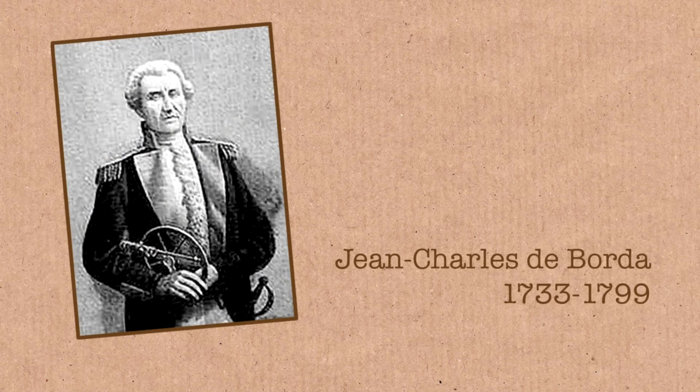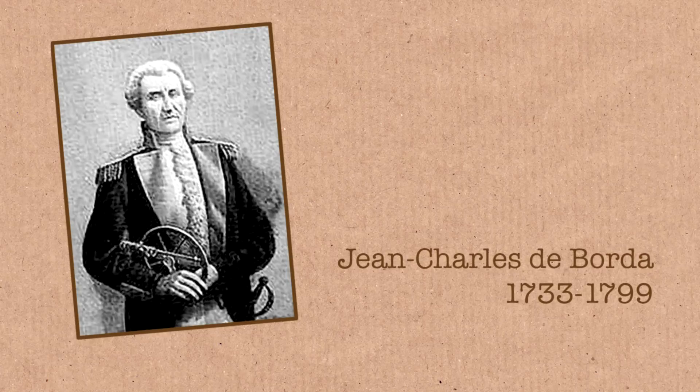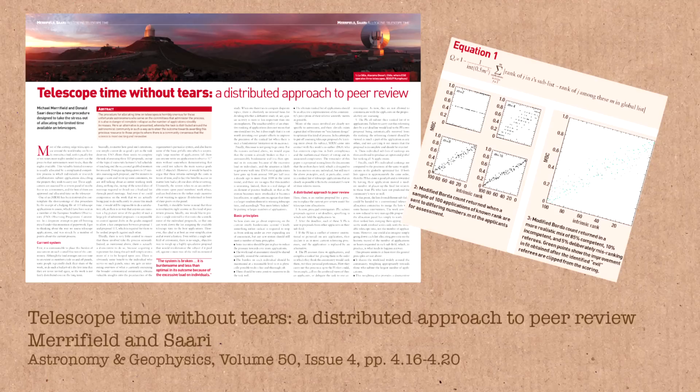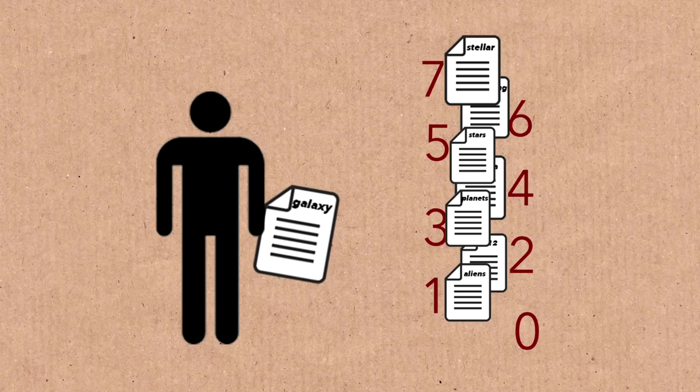There's an astronomical connection here: the guy Borda who invented this was himself an astronomer. He invented it because he was trying to get into the National Academy in France and thought the voting was being rigged against him. So he became very interested in electoral theory and how to ensure that final votes end up honest — and this modified Borda count came from him, though applied here to something rather different: ranking telescope proposals.